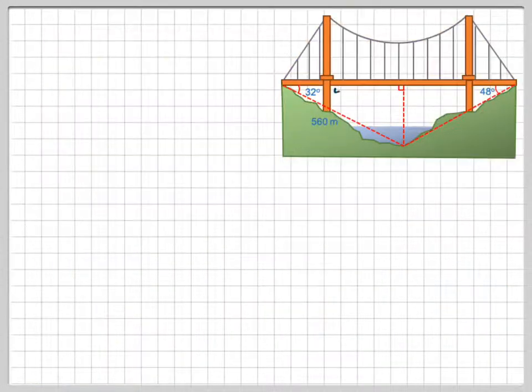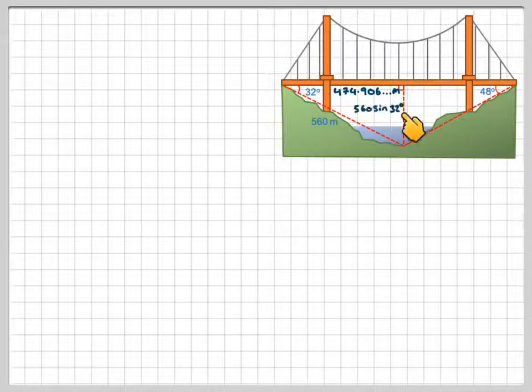We're not going to round it off just yet, because we're going to need that here in order to calculate the whole length. We're going to need to find this one as well. But we know the depth is 560 sine 32.